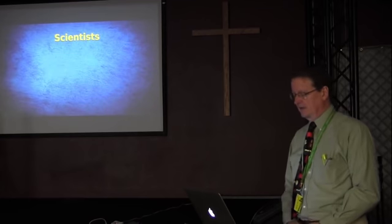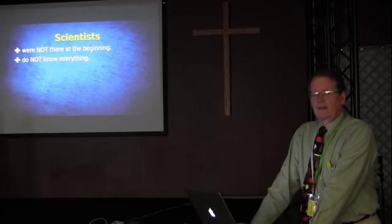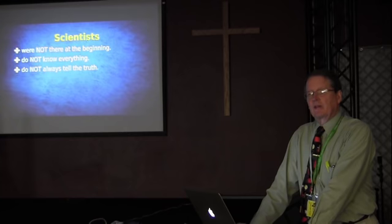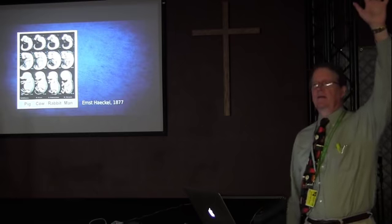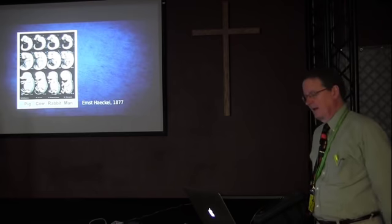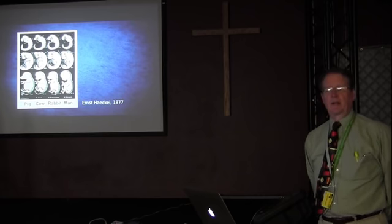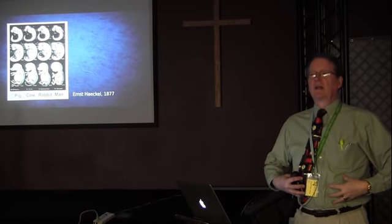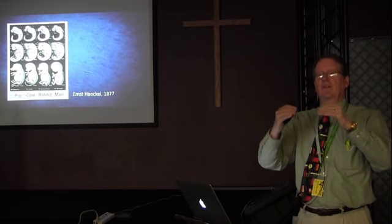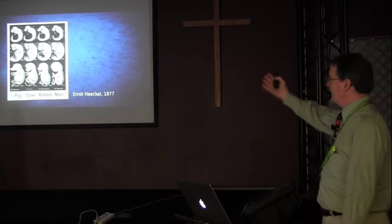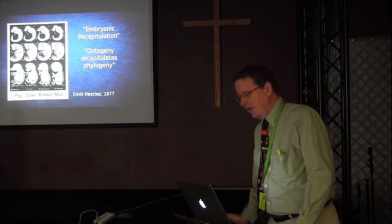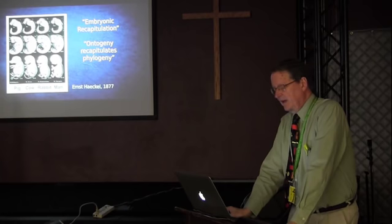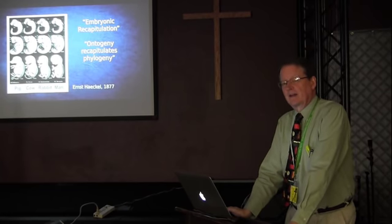Contrast that with scientists: they were not there at the beginning; they don't know everything, which is why they're scientists — they're trying to learn things; they don't always tell the truth; sometimes they don't tell the truth on purpose. Have any of you ever seen that picture? That picture was developed by Ernst Haeckel, a German evolutionist in 1877. He says that as different creatures develop in the womb, they go through their evolutionary history, and at the same stage of development they look basically the same. He called his theory embryonic recapitulation — the embryo is rehearsing evolutionary history, or 'ontogeny recapitulates phylogeny.' Beautiful pictures. Only problem is they were a fraud.